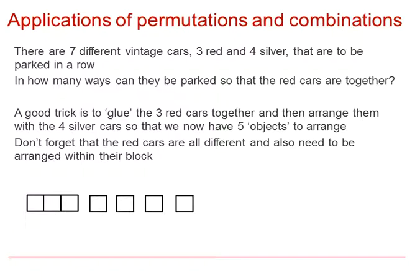However, we need to remember that the red cars are all different and also need to be arranged within their block. For three objects, we know that there are three factorial ways to arrange these. And then, for the five objects of which the three red cars count as one object, there are five factorial ways to arrange those. So, all in all, we have three factorial times five factorial, or 720 ways to arrange.